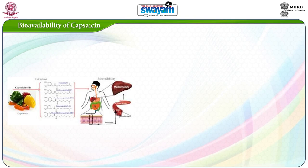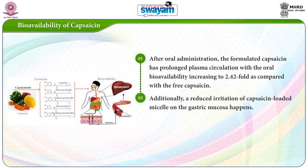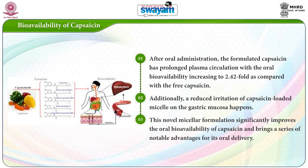Now coming to bioavailability of capsaicin. After oral administration, the formulated capsaicin has prolonged plasma circulation with the oral bioavailability increasing to 2.42-fold as compared with free capsaicin. Additionally, a reduced irritation of capsaicin-loaded micelle on the gastric mucosa occurs. This novel micellar formulation significantly improves the oral bioavailability of capsaicin and brings a series of notable advantages for its oral delivery.